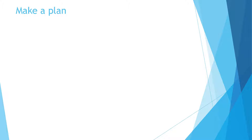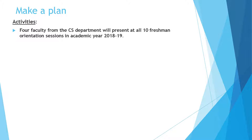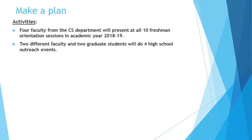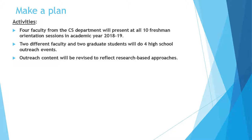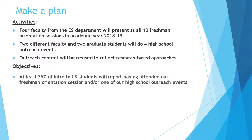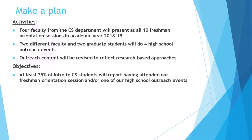Finally, I encourage all of you to draw up an evaluation plan. At the very minimum, you will want to identify your activities. Here is a quick outline of one: four faculty from the CS department will present at all ten freshman orientation sessions in academic year 2018-2019; two different faculty and two graduate students will do four high school outreach events; outreach content will be revised to reflect research-based approaches. Then you want to have your objectives in there, like: at least 25% of intro to CS students will report having attended our freshman orientation session and/or one of our high school outreach events.